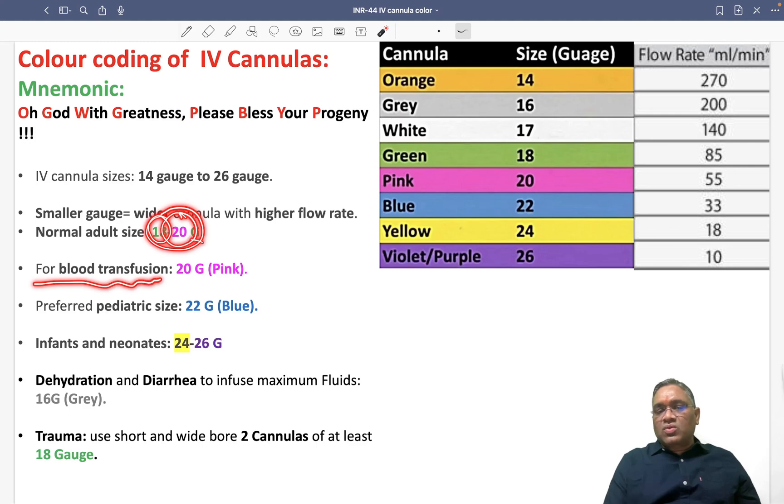For blood transfusion, we use 20g, which is pink in color.